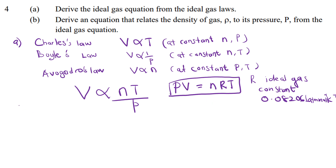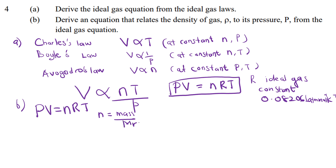For part b: derive an equation that relates density to pressure from the ideal gas equation. Starting from PV = nRT, and since n = mass/molar mass (M), we substitute to get PV = (mass × R × T) / M. Rearranging: P = (mass × R × T) / (V × M).